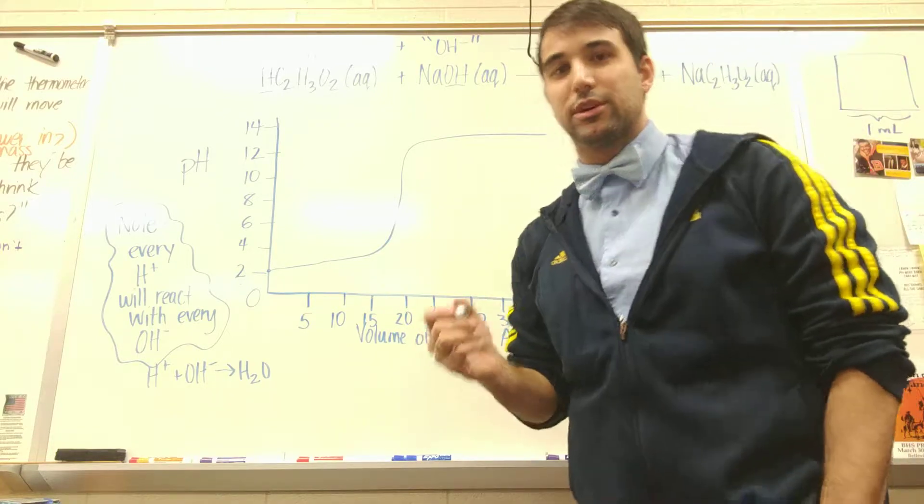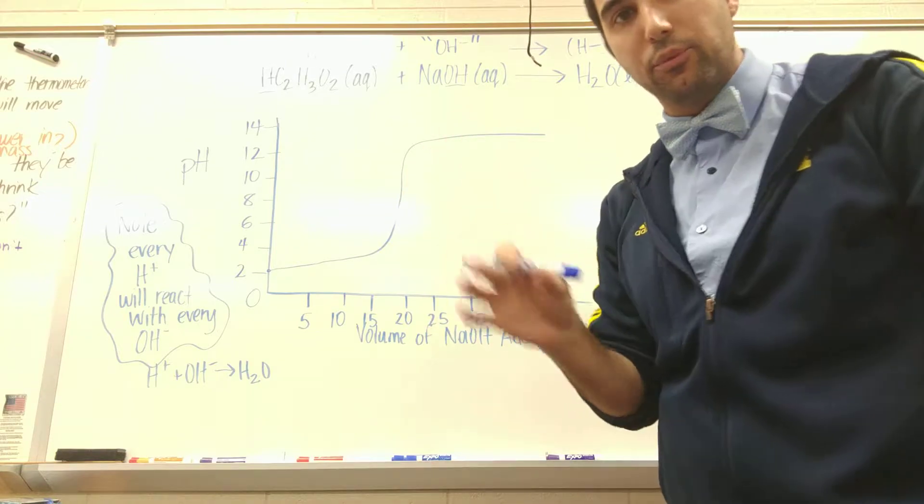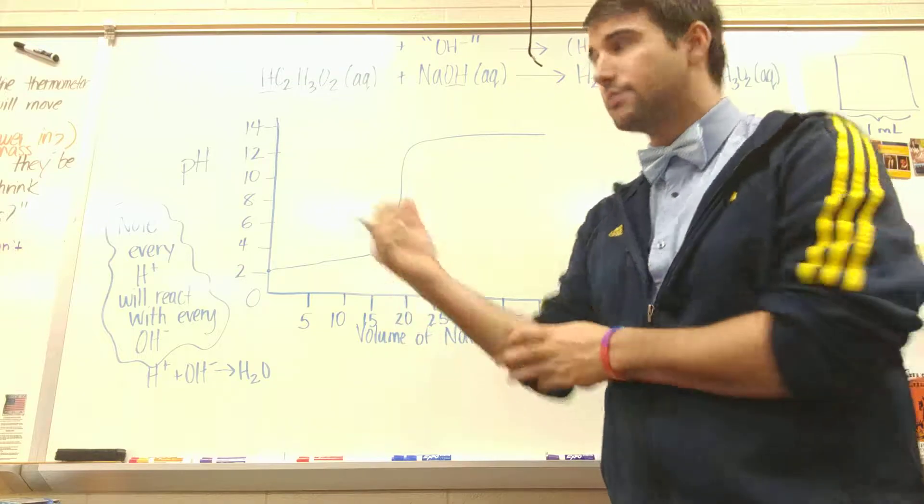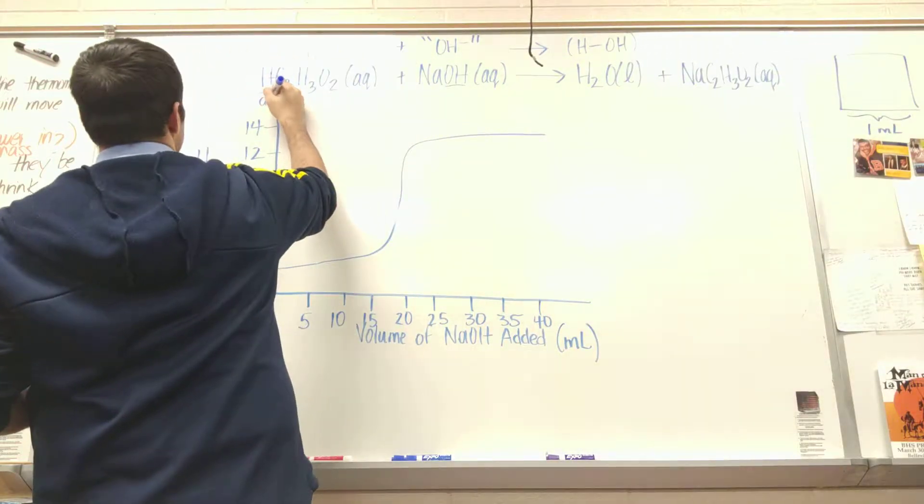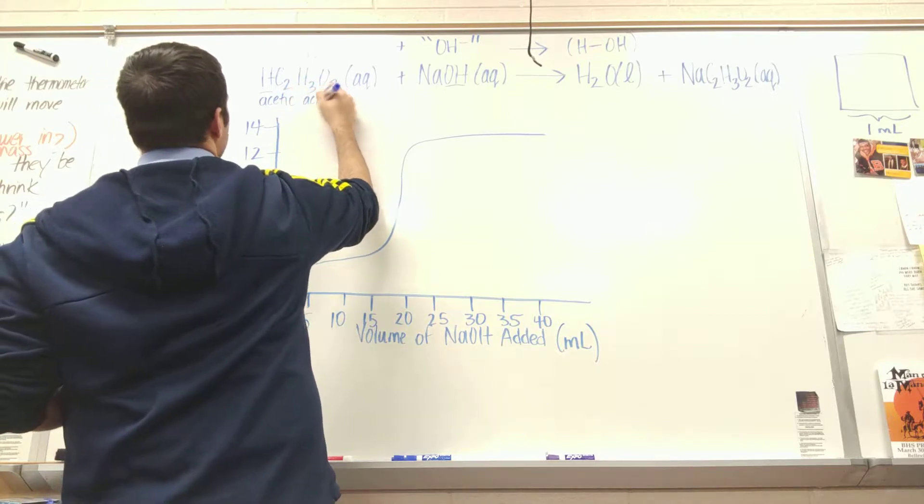Alright, hey again AP Chemistry. So I wanted to focus more on the reactions itself with titrations and focus on the acetic acid. Now acetic acid, which is HC2H3O2, that is a weak acid.